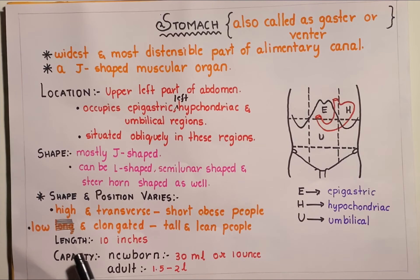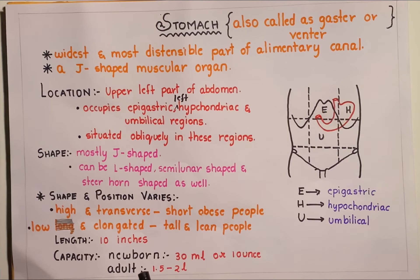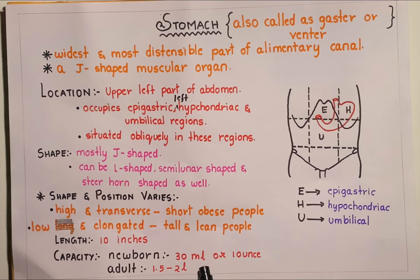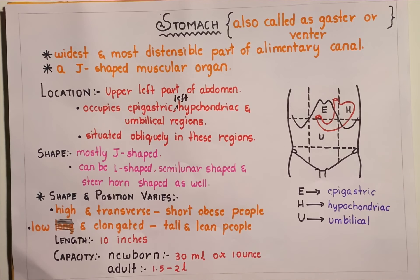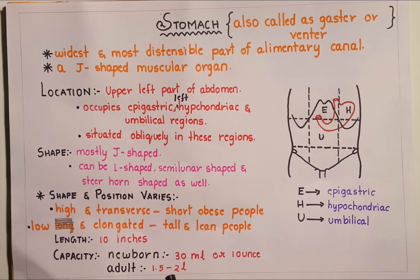The length of the stomach is 10 inches. The capacity of the stomach in a newborn baby is around 30 ml, which is equal to 1 ounce, and in an adult it is around 1.5 to 2 liters.